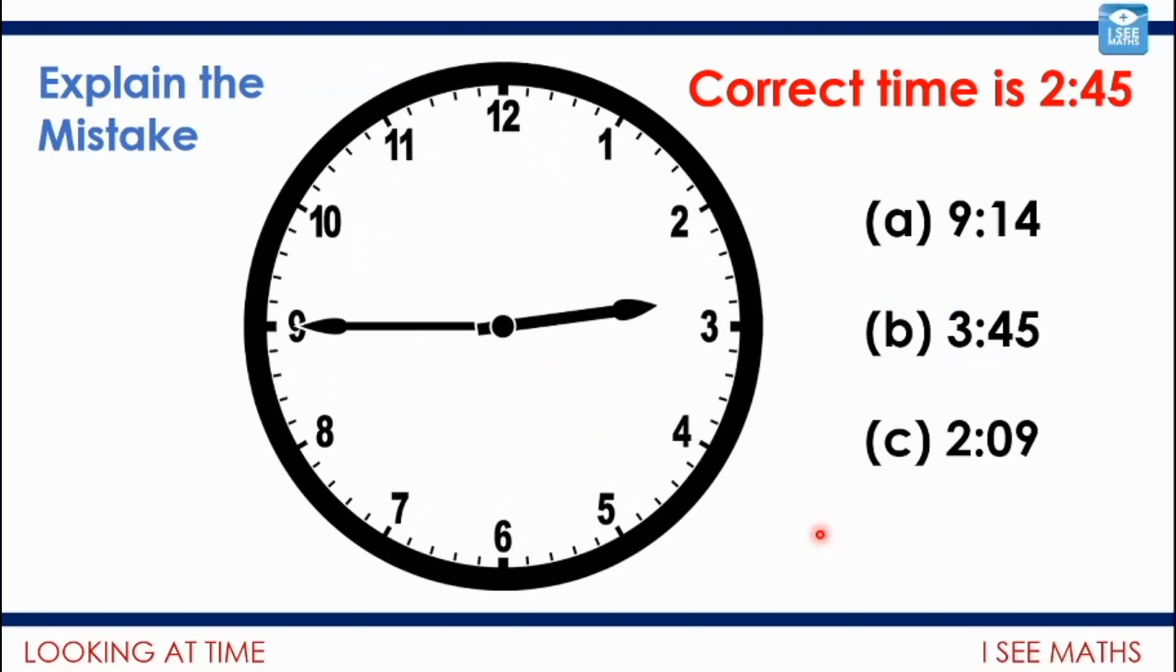I want you to have a look at this example here. These are three common wrong answers I'll get if I ask children, what's the time? The correct time here is actually 2:45. I wonder if you can explain the mistakes. What mistakes have the children made here? Let me see if I can explain the thinking here. This thinking is very understandable. We think the hour must be nine. Look, it's pointing at the nine. And how many minutes passed? 14 minutes. What's wrong with that? Well, of course, this one's the hour hand and this one's the minute hand. We've switched around the hour hand and the minute hand there.